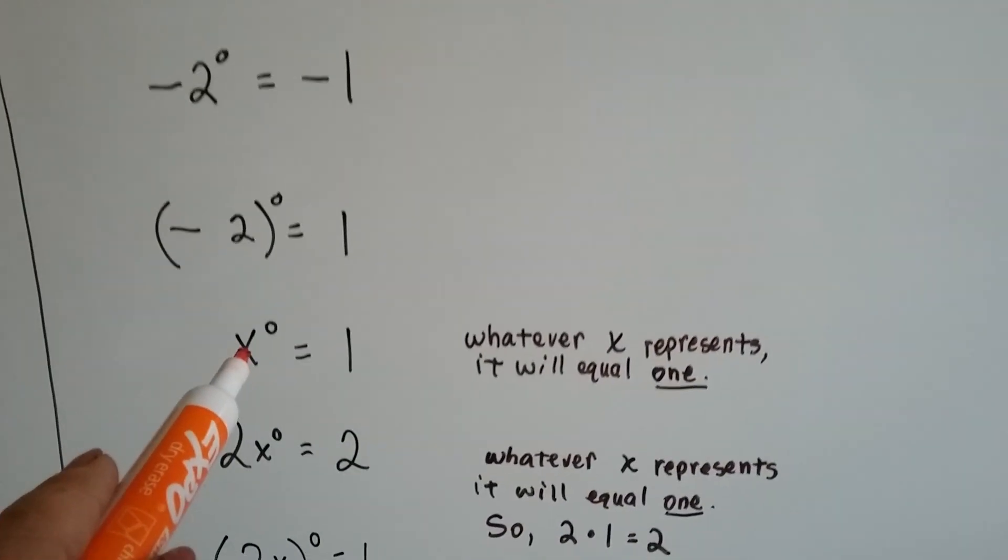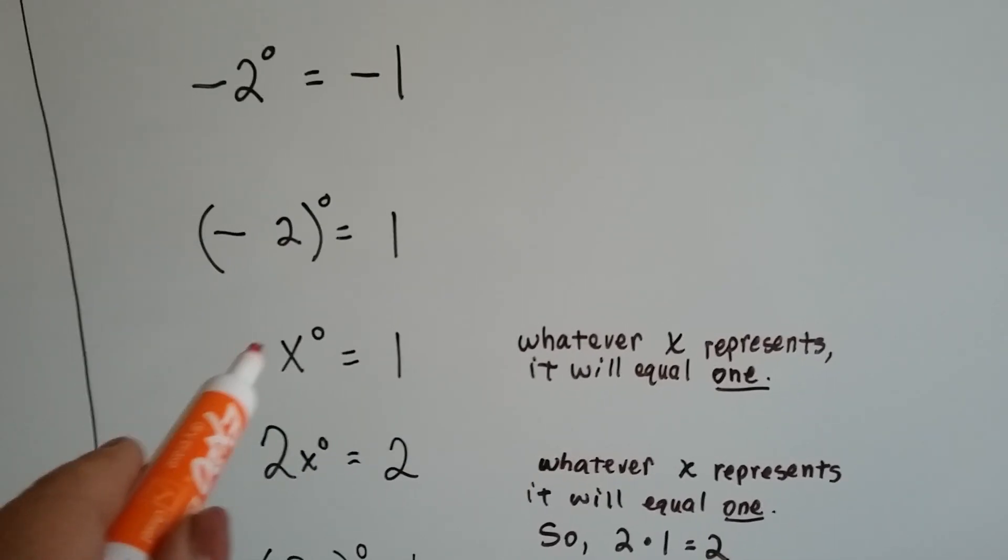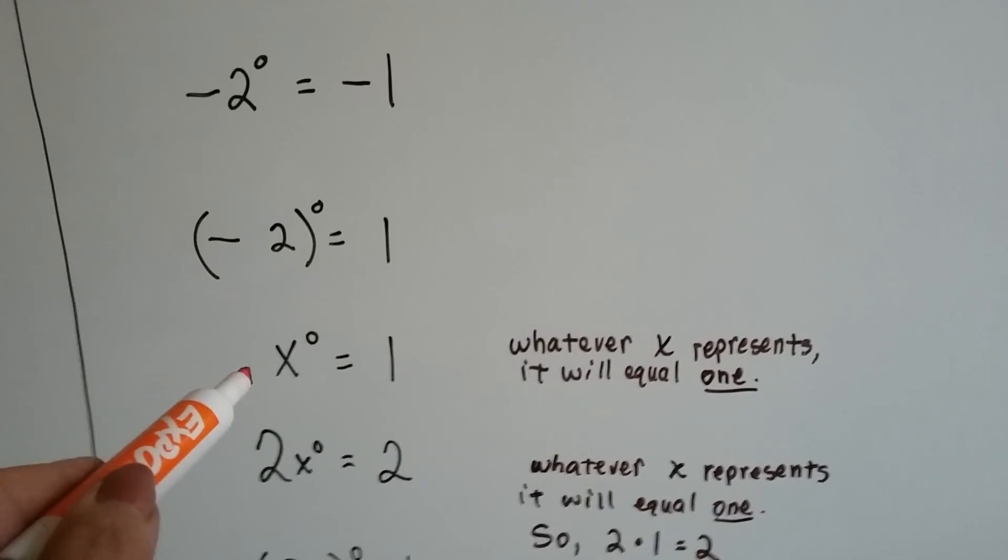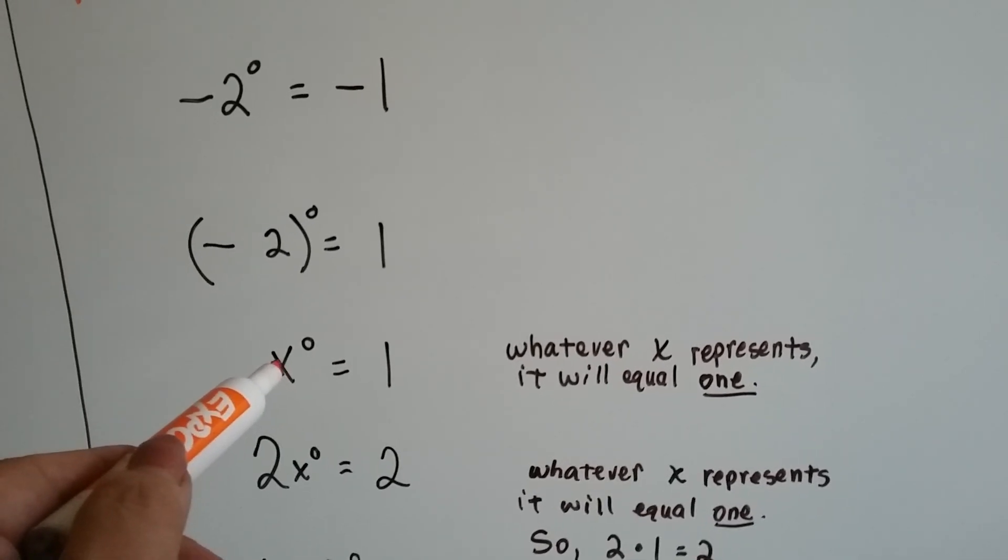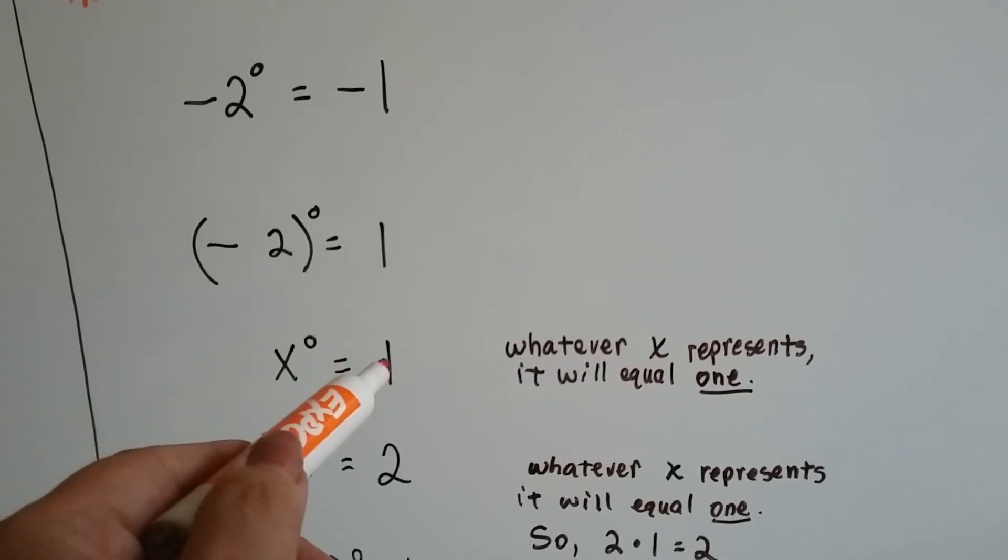If we have a variable to a zero power, it's going to equal 1, because whatever this x represents, it could represent 2, it could be 5, it could be 1,000, it could be 5,237. It doesn't matter. It's got a zero exponent, it's going to equal 1.